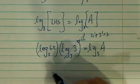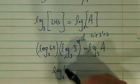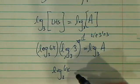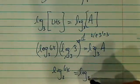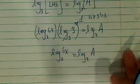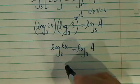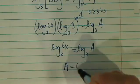So from here, we reduce the original equation into log base 3 of 6x equal to log base 3 of a. So therefore, by comparison, a is equal to 6x.